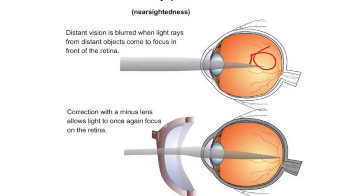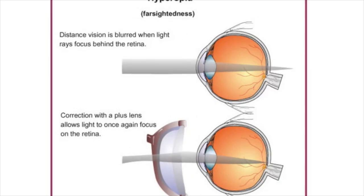A diverging lens fixes this issue as the light will diverge outward before entering the eye. Therefore, the light rays will enter at a larger angle and end up converging onto the retina. The strength of the lens varies depending on the severity of the vision problem.